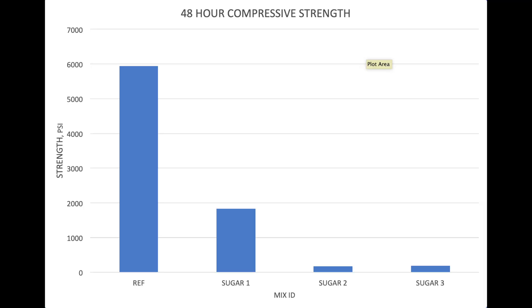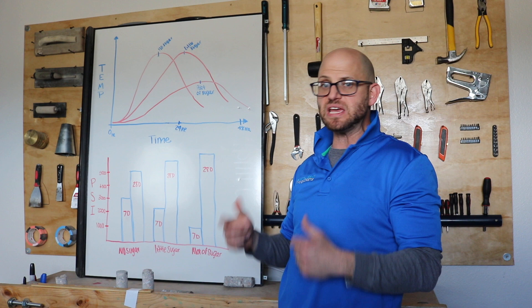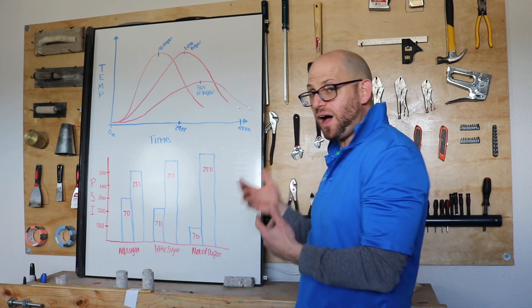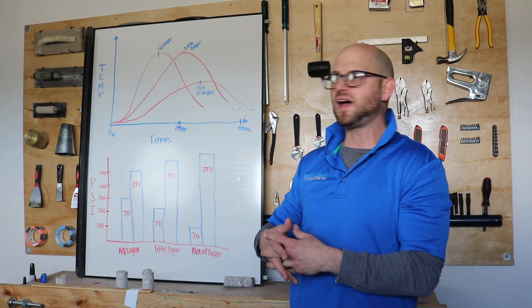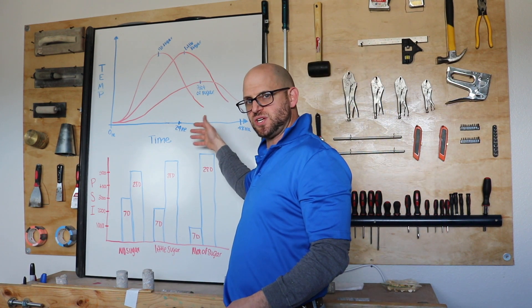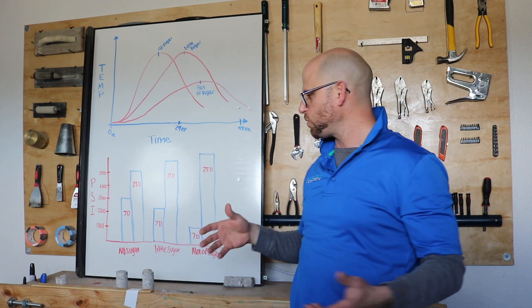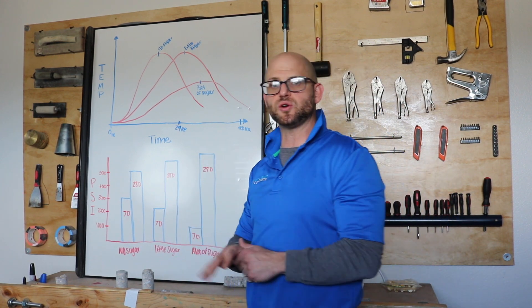Looking at our strength data thus far with our 48-hour strength, you can see that we have a major reduction in strength as we increase the amount of sugar in the mix. Our hypothesis is validated — as we put in more sugar, we reduced the temperature of hydration during that 24–48 hour period, and because of that we see reductions in early strength.